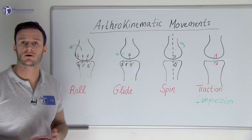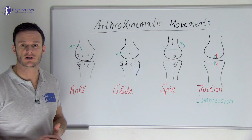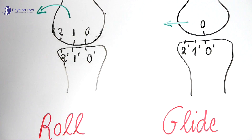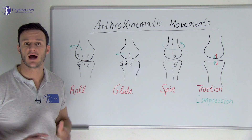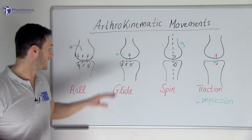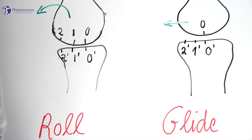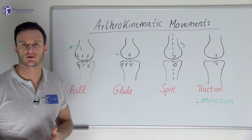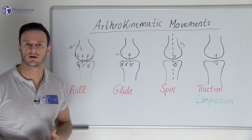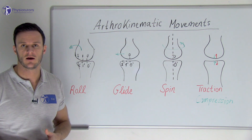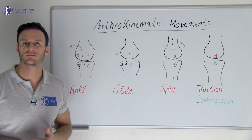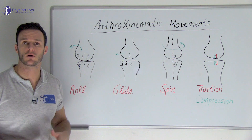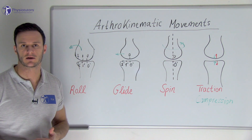If rolling occurs alone, it causes compression on the surface on the side to which the bone is angulating, so on the left side in this case, and separation on the other side, so on the right side in this case. In normally functioning joints, pure rolling does not take place without a spin or a slide, because otherwise the moving joint surface would just roll off the edge of its joint partner.